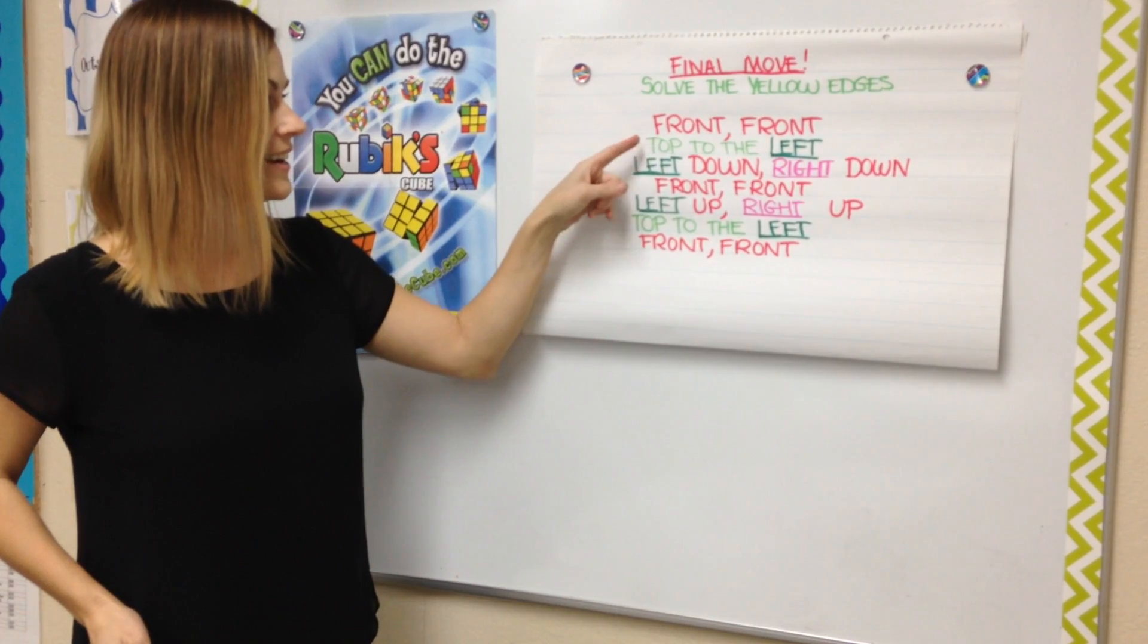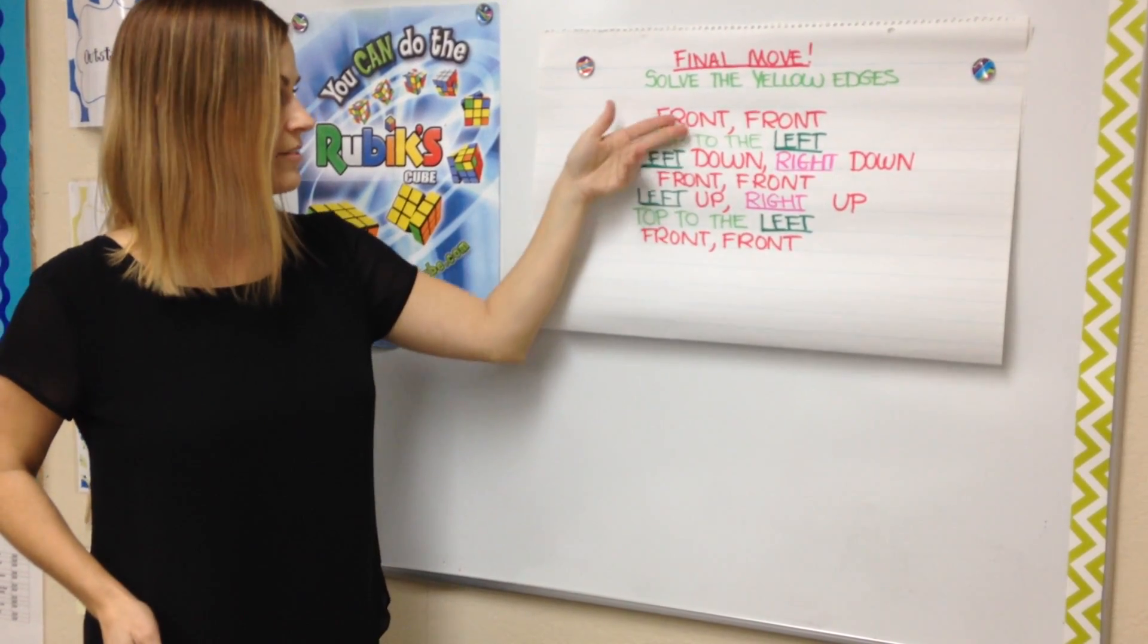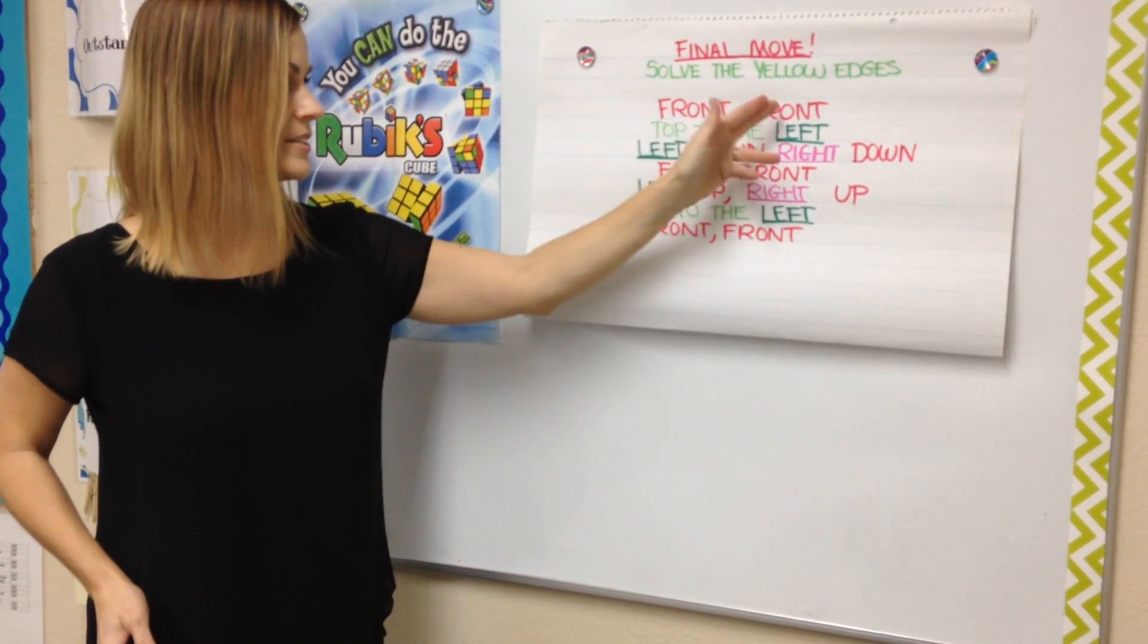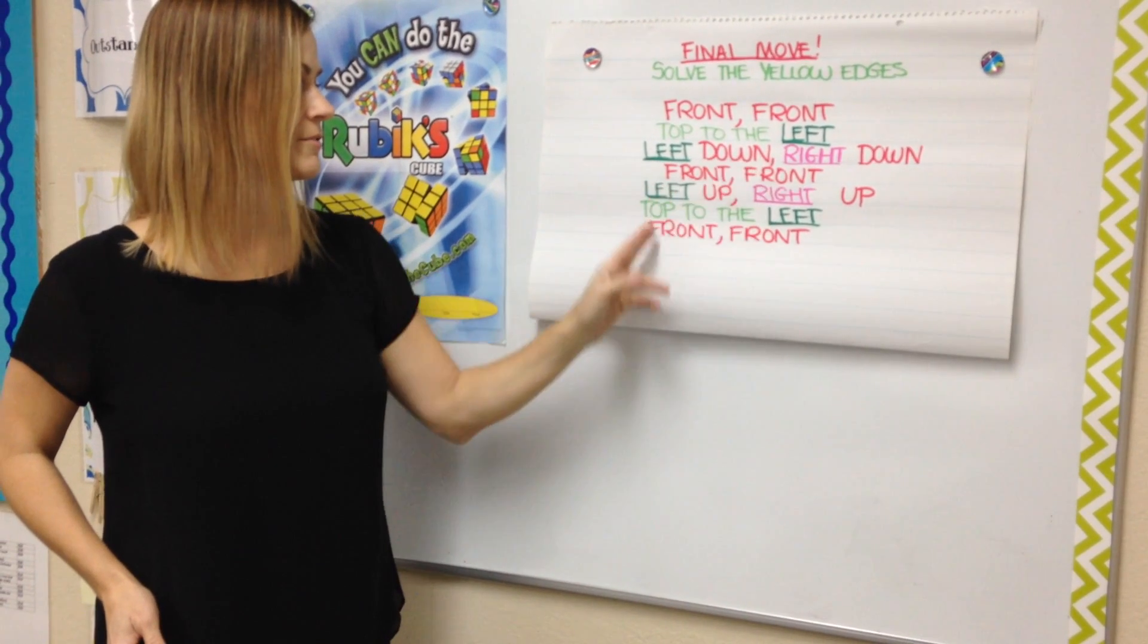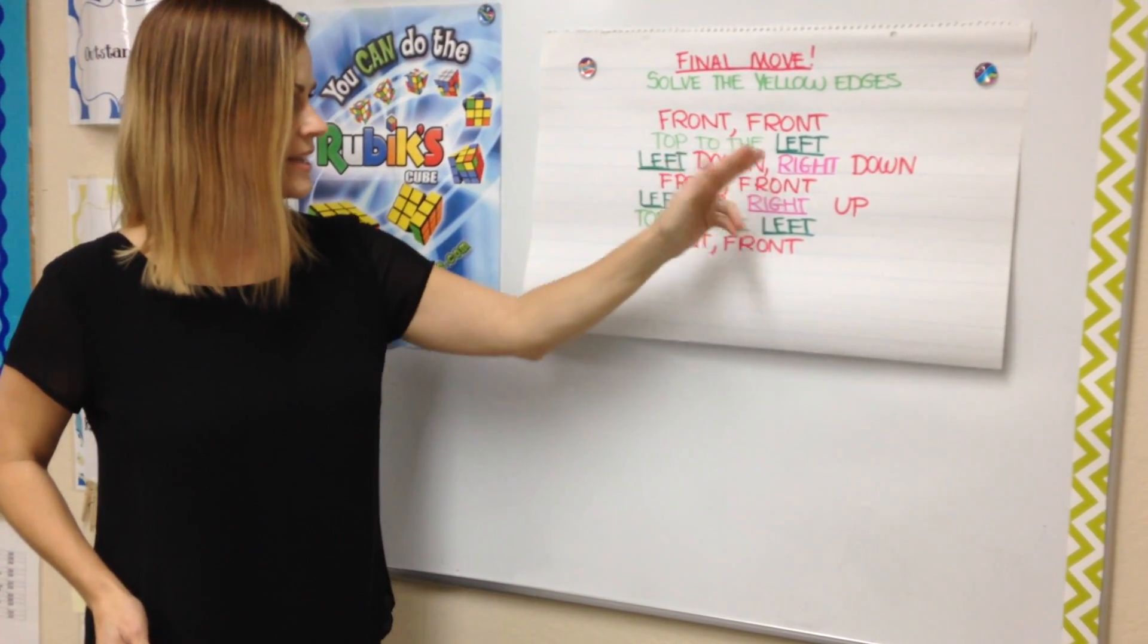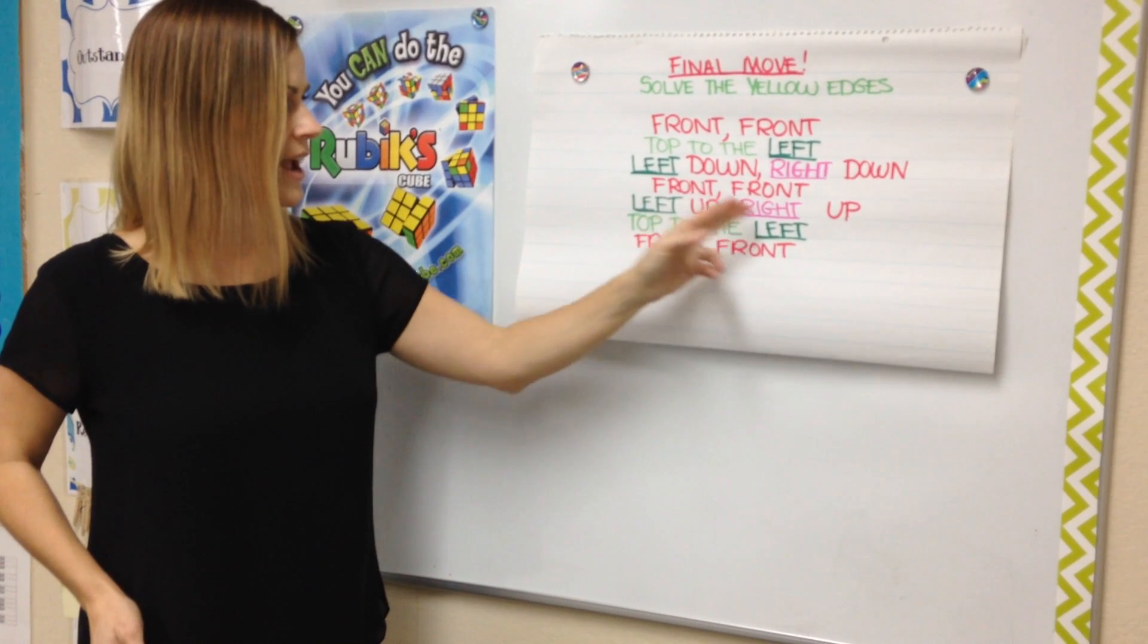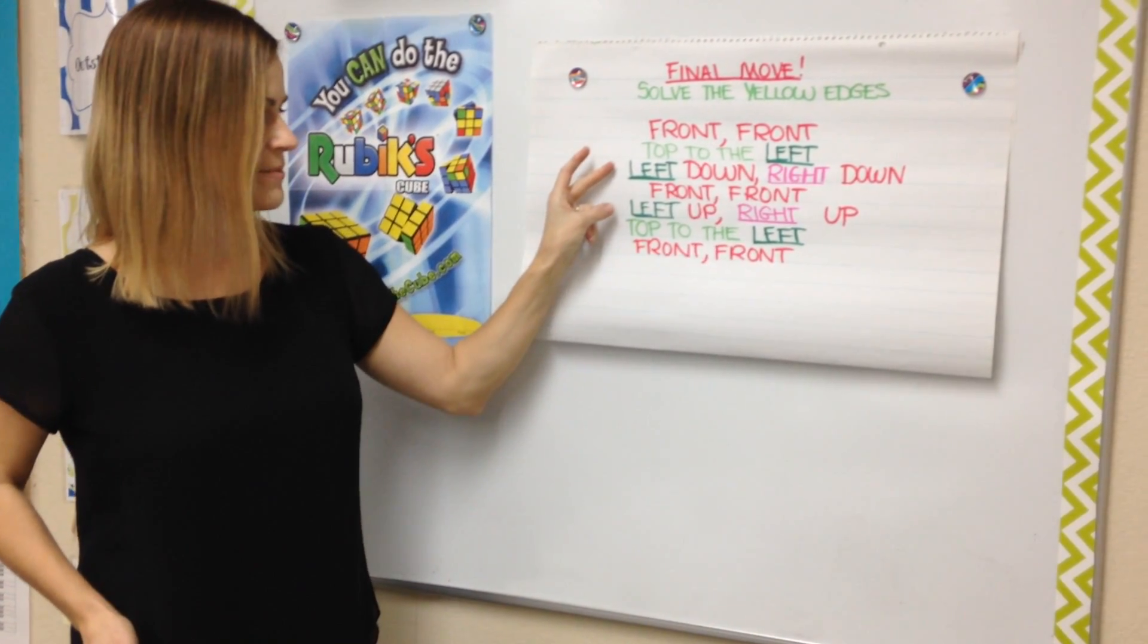If you take a look here, every three lines is a front, front, front, front, front, front. And then it goes left down, right down, left up, right up. So those are sandwiched in between.